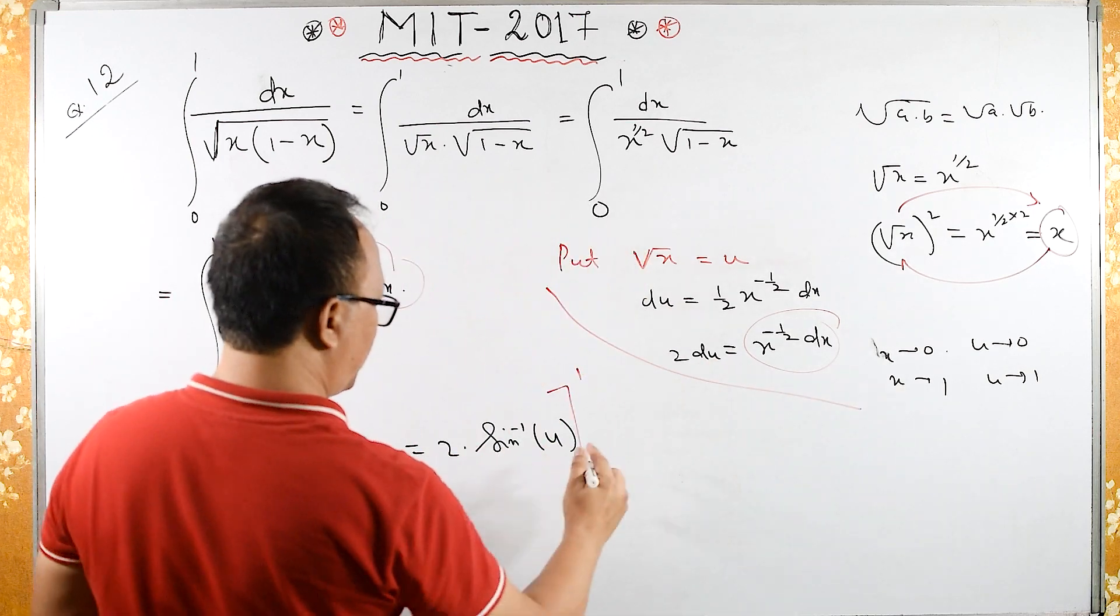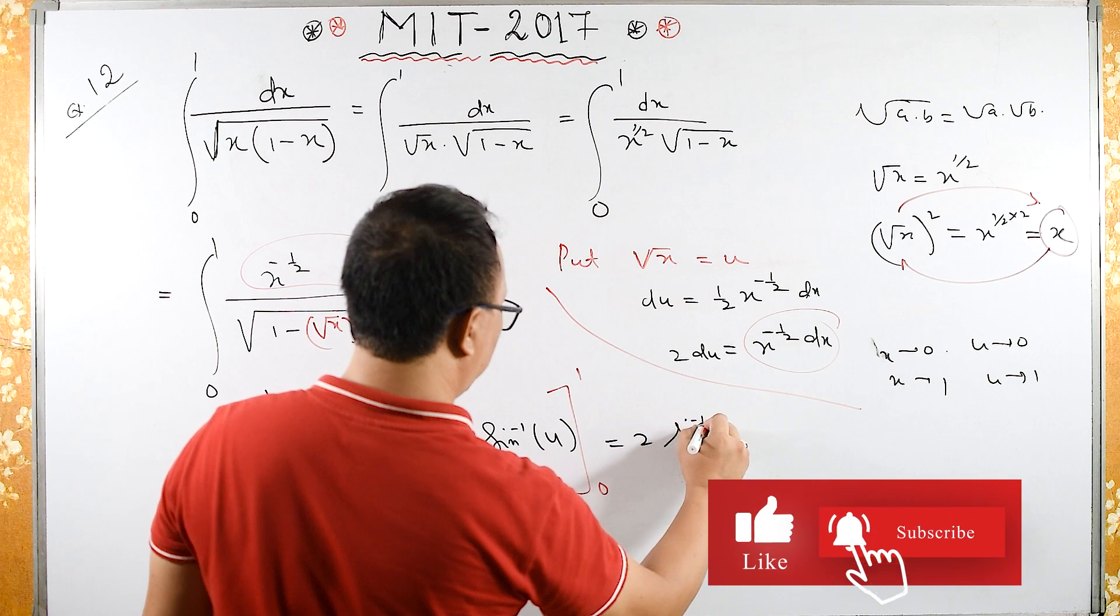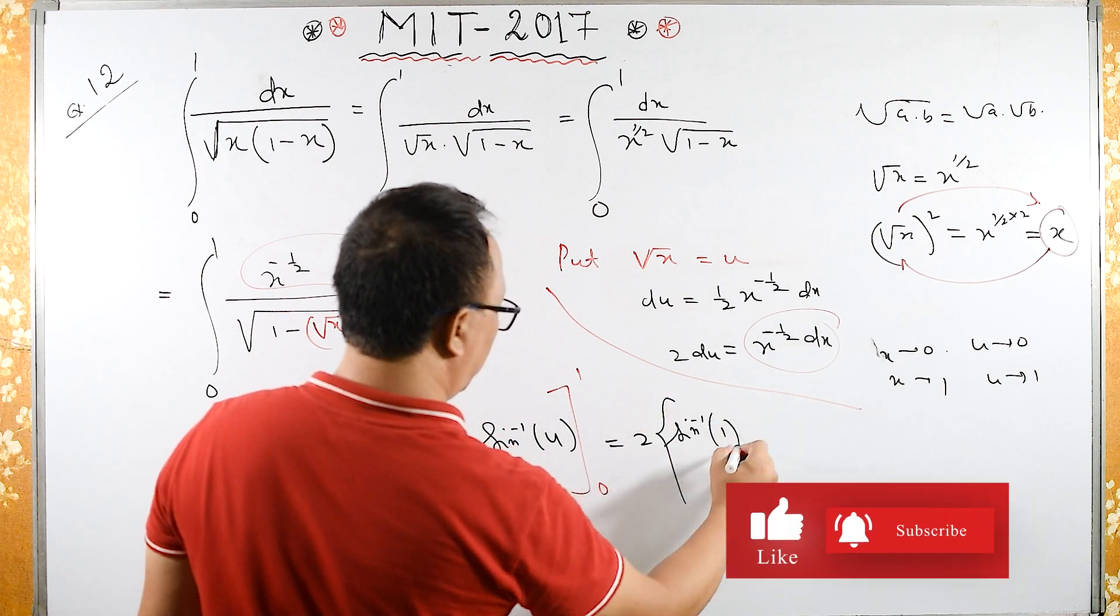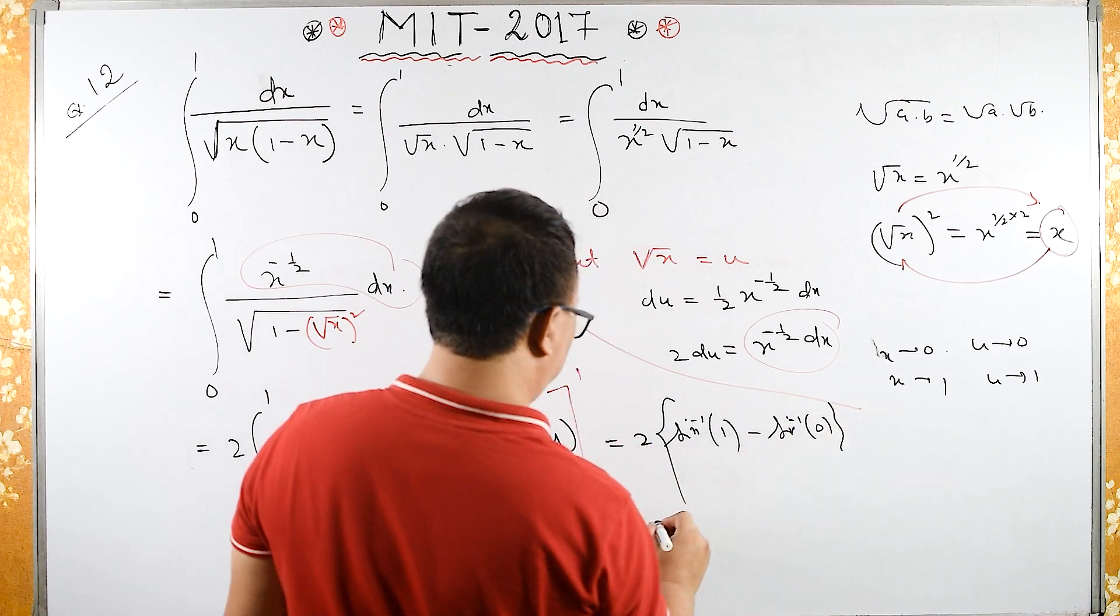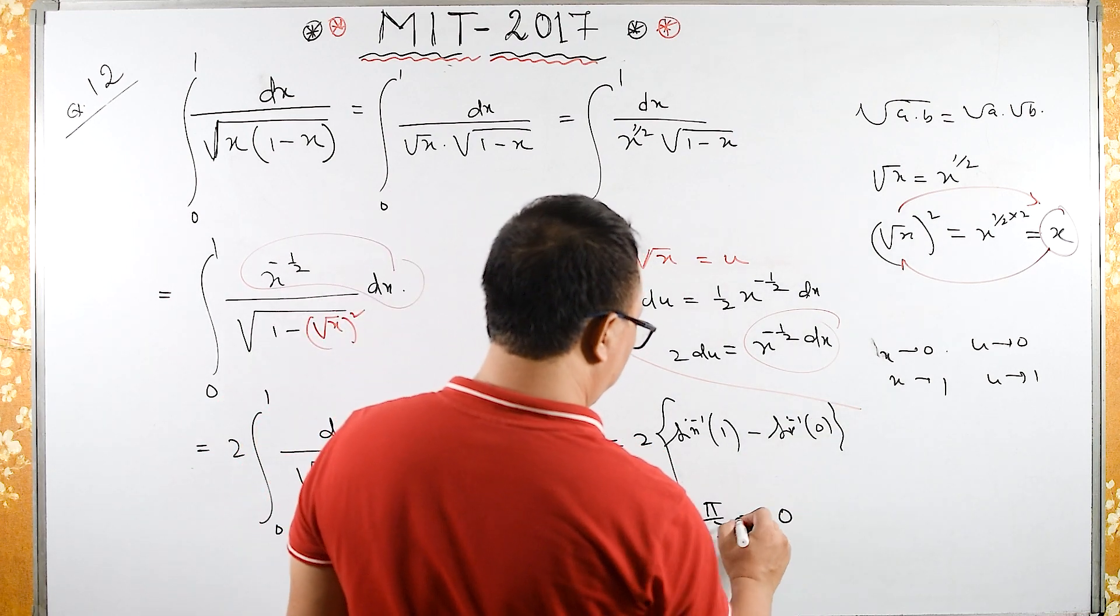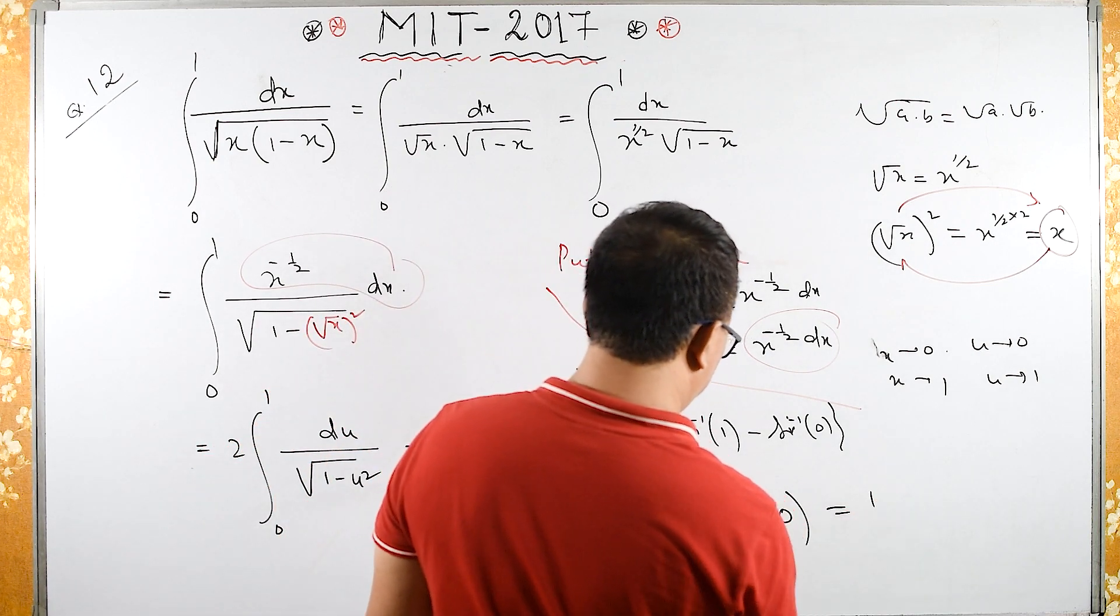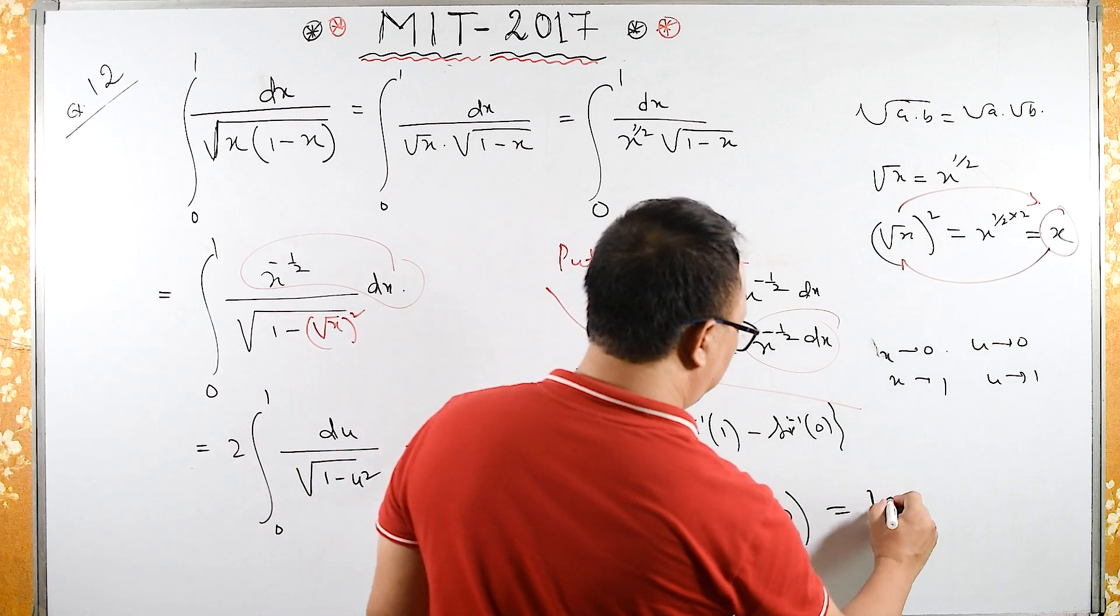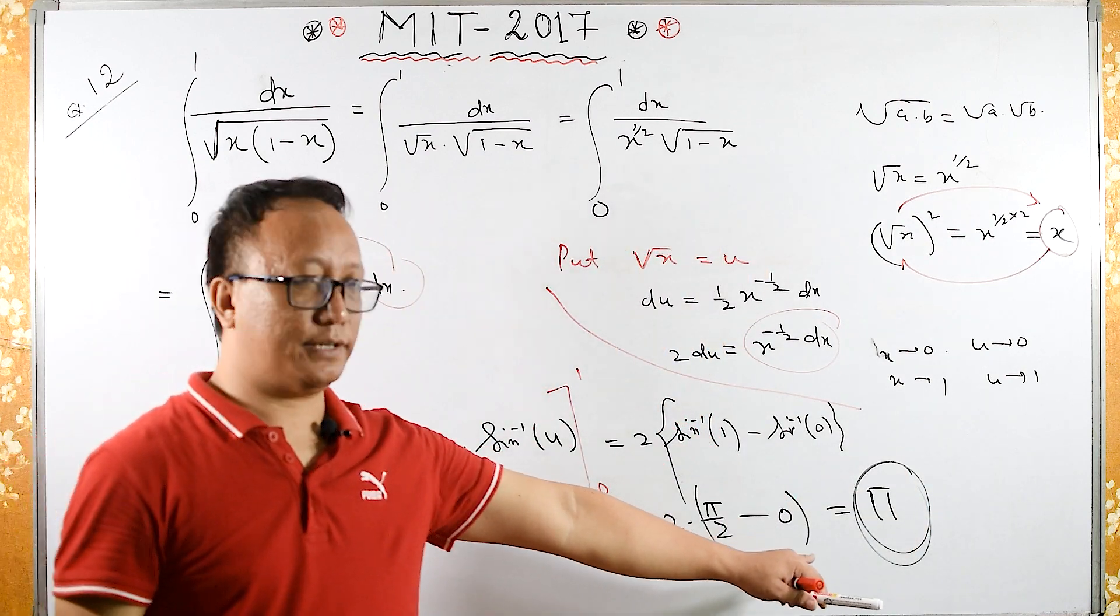If you substitute the upper limit, sin inverse 1 minus sin inverse 0 is pi by 2, which is 90 degrees, minus sin inverse 0, which is 0. If I cancel the 2s, I will get pi. And this is the required answer.